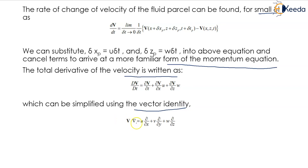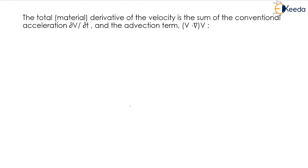Therefore v·∇ = u·(∂/∂x) + v·(∂/∂y) + w·(∂/∂z). The total derivative of the velocity is the sum of the local acceleration term ∂v/∂t and the advection term (v·∇)v. So dv/dt = ∂v/∂t + (v·∇)v.